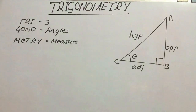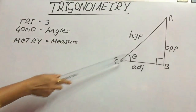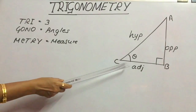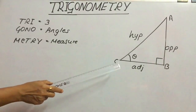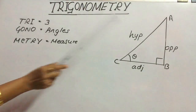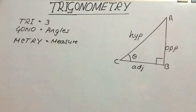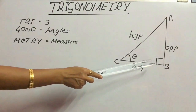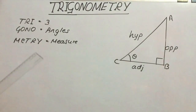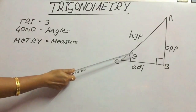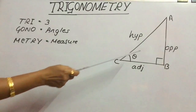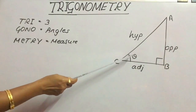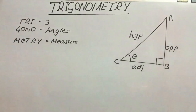Let us consider a triangle — triangle ABC. It is a right angle triangle with the right angle at B. If we consider angle C as theta, then the side opposite to the right angle is called the hypotenuse. The side adjacent to angle theta is the adjacent side, and the side opposite to theta is the opposite side.